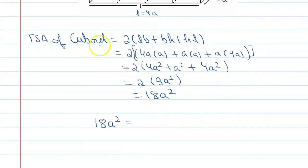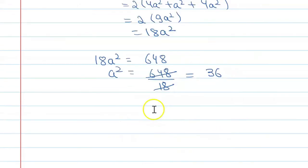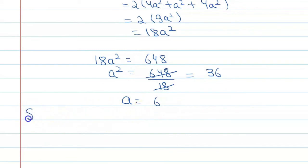Since the total surface area of the resulting cuboid is 648, we have a² = 648 ÷ 18. Cancelling the values, you get a² = 36. So the value of a = 6. Therefore, the side of the cube is 6 cm.